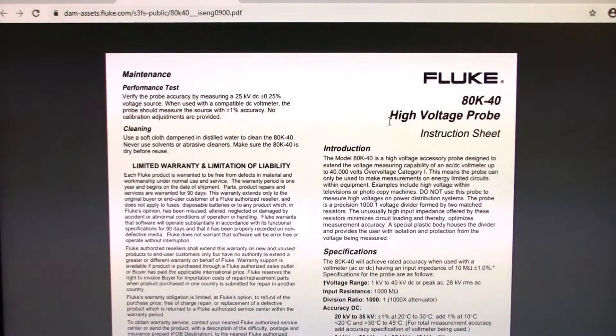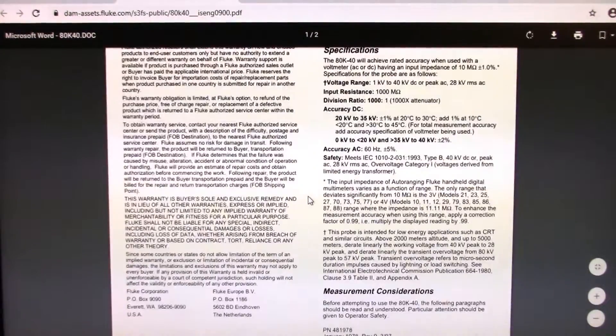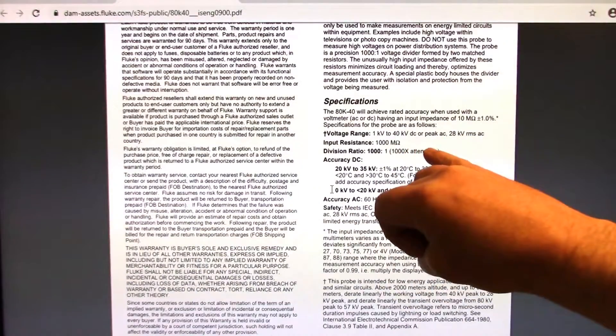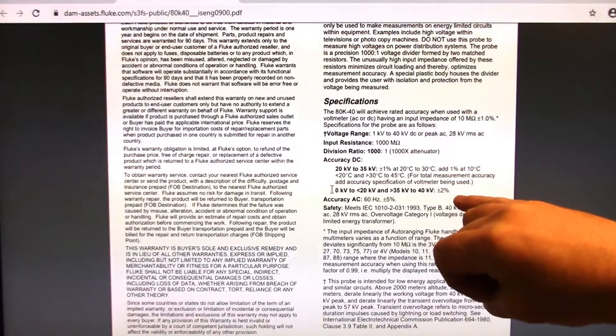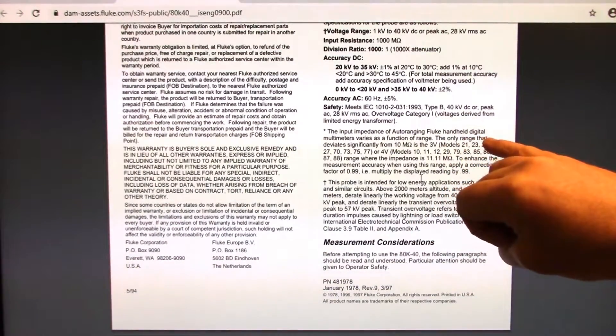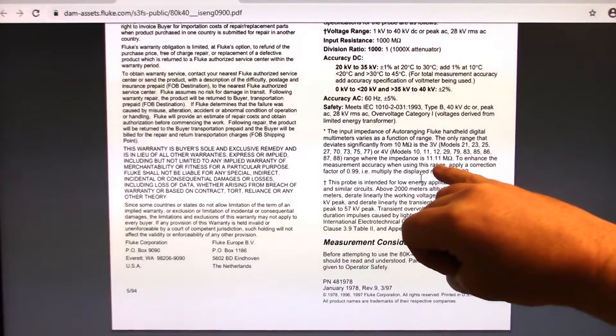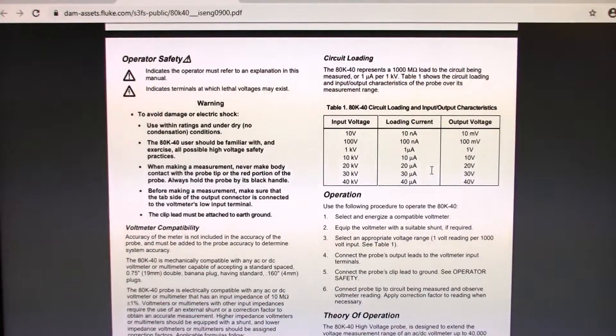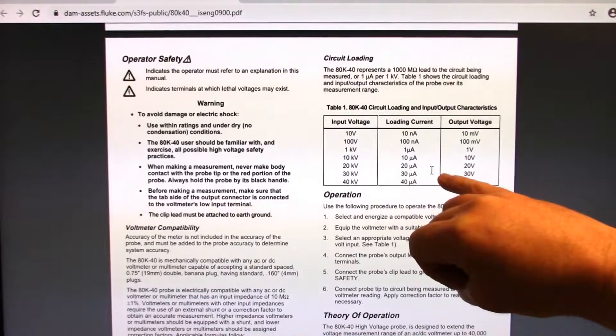Even better is the Fluke 80K40 instruction manual. I'm going to link to this below in the description because this is a pretty good manual, better than the one that comes with these things. As you can see, it's got the exact same specifications. 40 kV DC, 28 kV AC input resistance, 1000 mega ohms. It's going over the impedance of the auto ranging in the Flukes. A lot of Flukes have actually got an 11.11 mega ohm internal resistance and we're going to check that out. Even in different scales, it will change. They just say if you've got that, you can just multiply your voltage by 0.99.